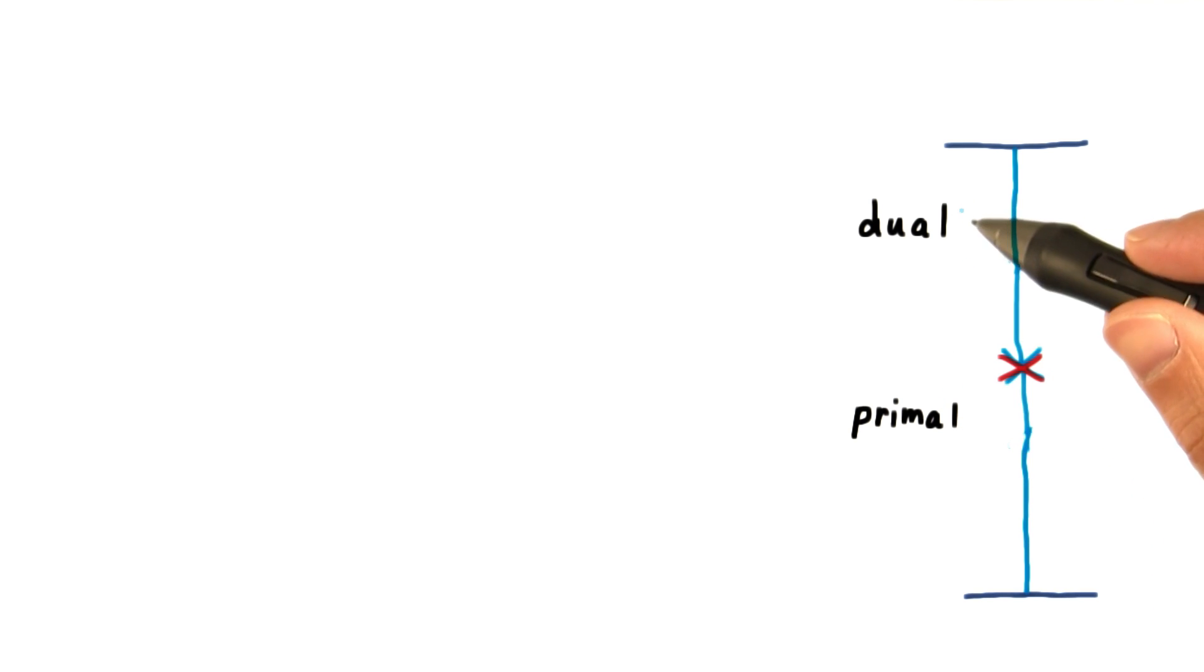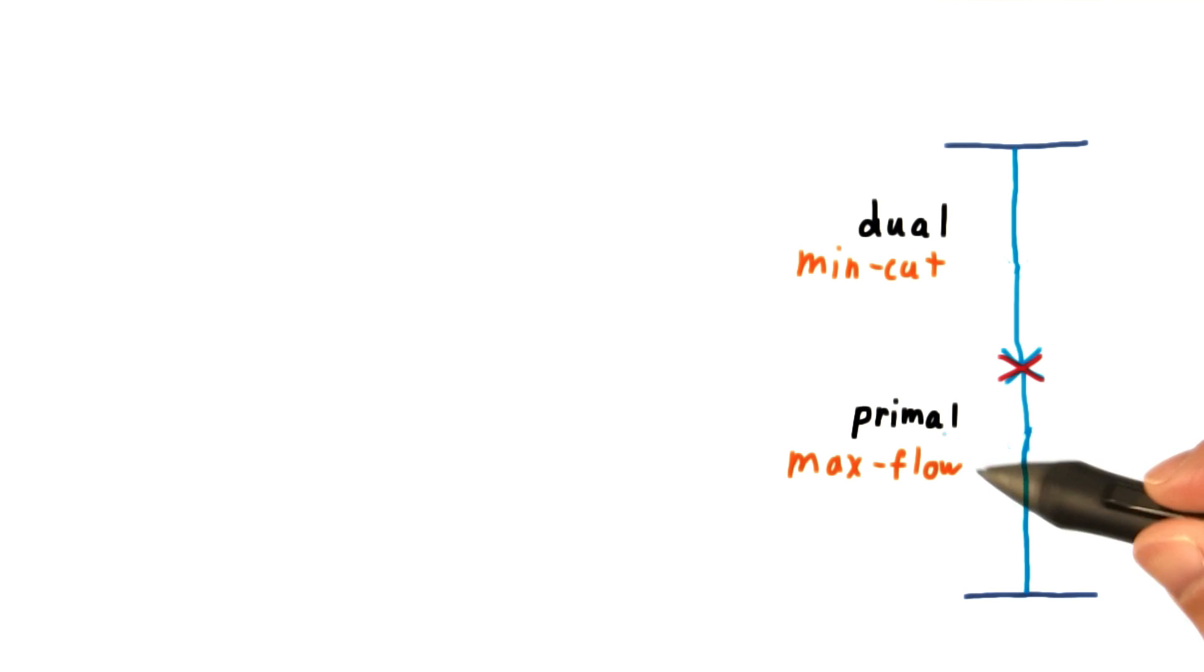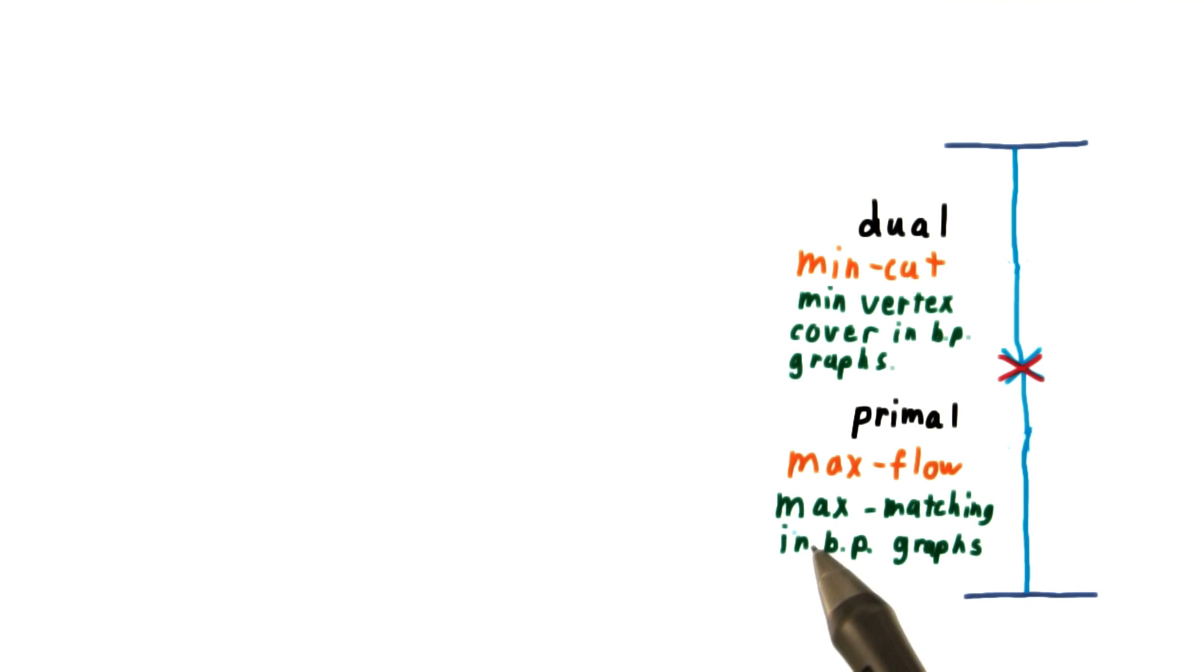We've just seen this with our primal and dual linear programs. But we saw it earlier in the semester as well with our max flow min cut problem, and also with our max matching in bipartite graphs and our min vertex cover in bipartite graphs.